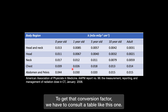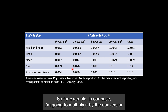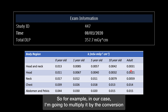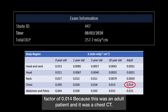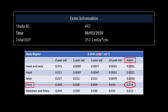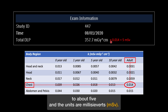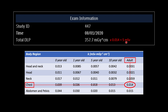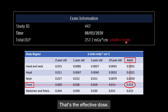To get that conversion factor, we have to consult a table like this one. In our case, I'm going to multiply it by the conversion factor of 0.014, because this was an adult patient and it was a chest CT. So the result comes out to about 5, and the units are millisieverts. That's the effective dose.